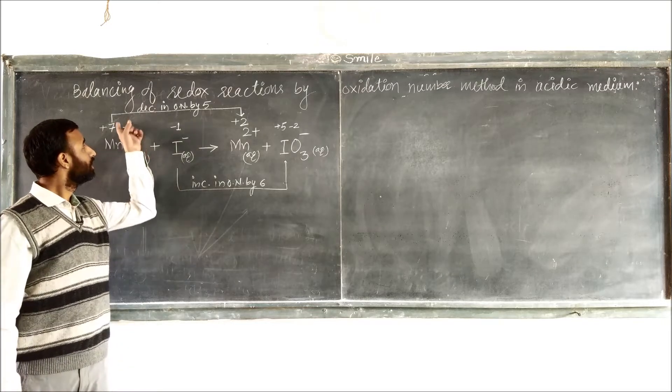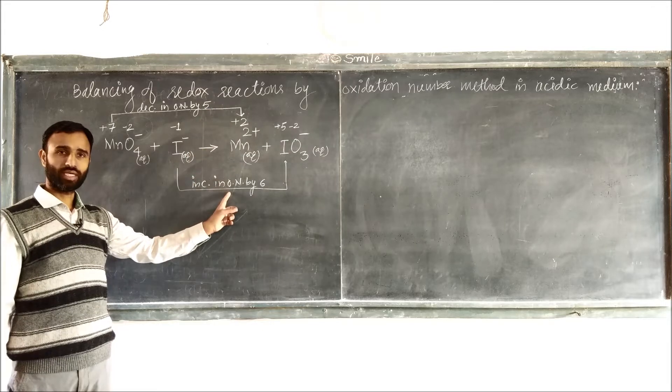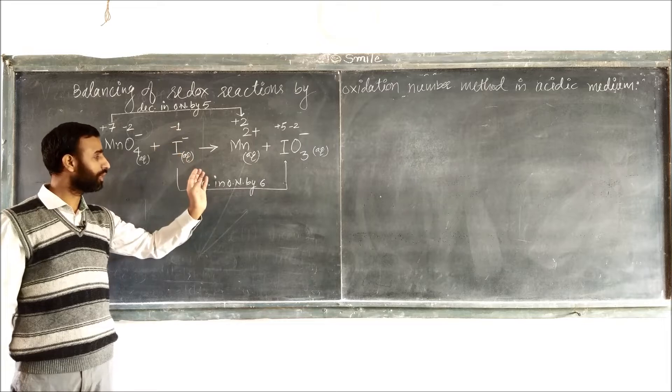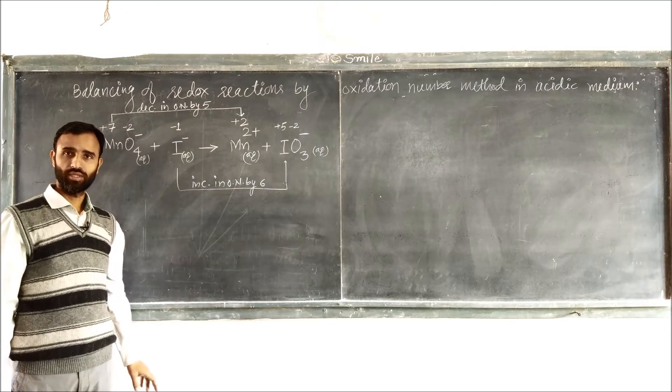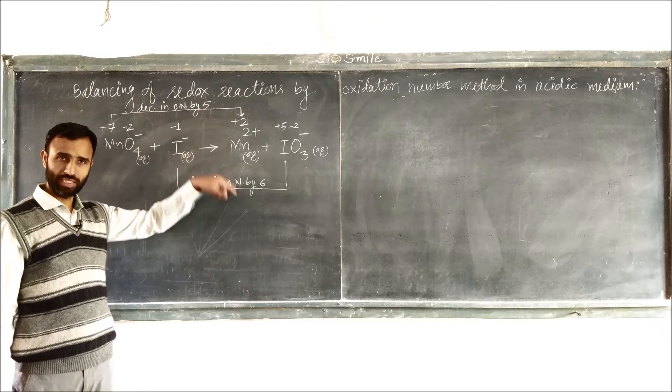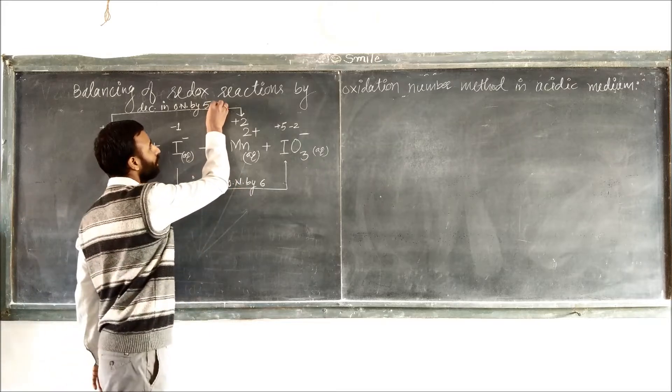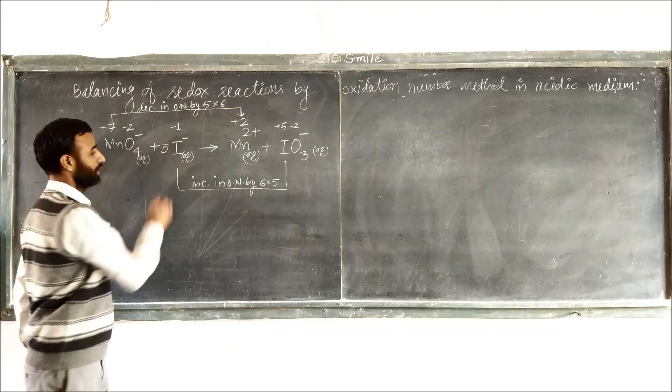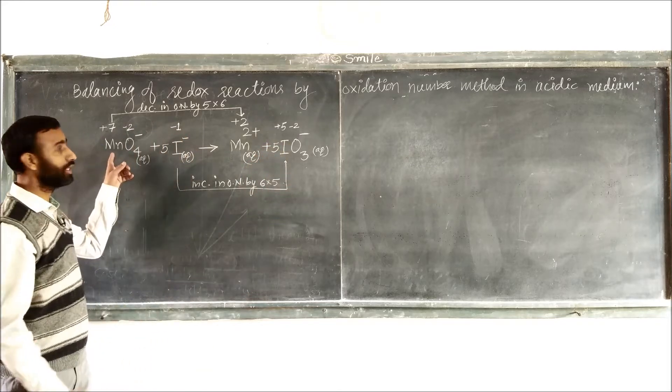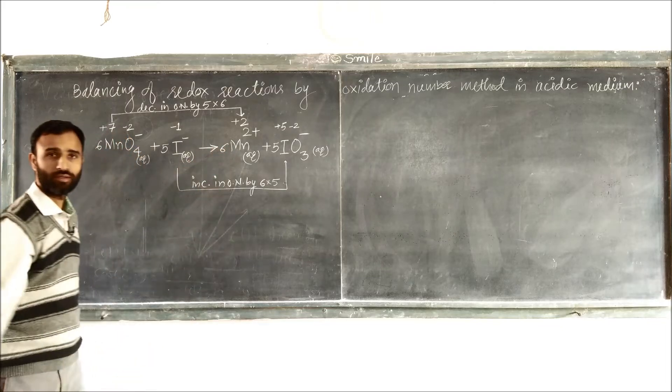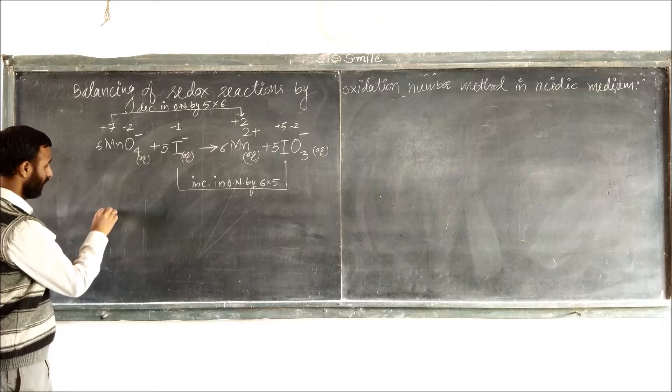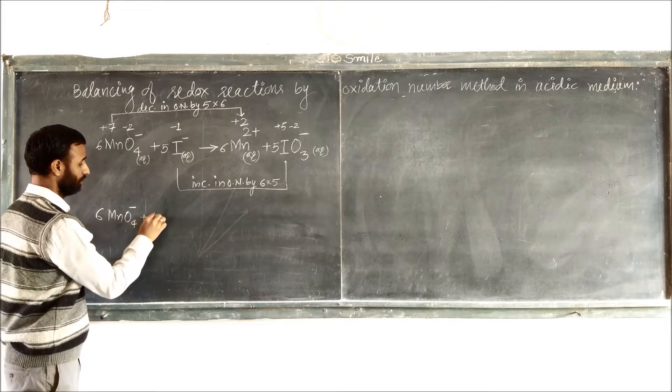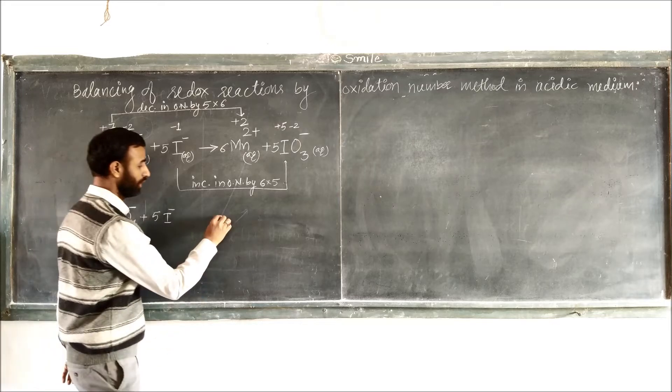In first case, decrease by 5. In second case, increase by 6. So now we balance increase and decrease, increase in oxidation number should be equal to decrease in oxidation number. Simply it is multiplied by 6 and it should be multiplied by 5. So we multiply this equation by 5 and this one by 6. Now write it separately: 6 MnO4 negative plus 5 I negative to give 6 Mn2 plus plus 5 IO3 minus.